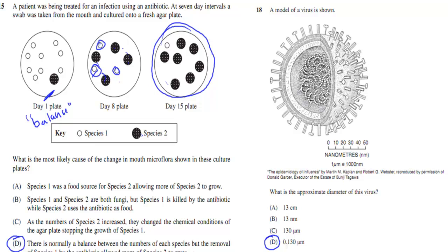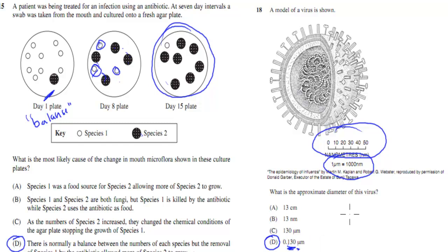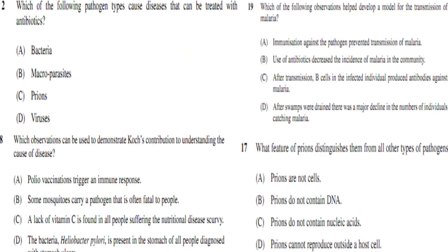For the virus size question, the answer is 0.13 micrometres, the same as 130 nm. The legend shows that 1 micrometre equals 1000 nm, so even if you didn't remember the size you could use that to figure it out. By comparison, bacteria would be about 10 micrometres.